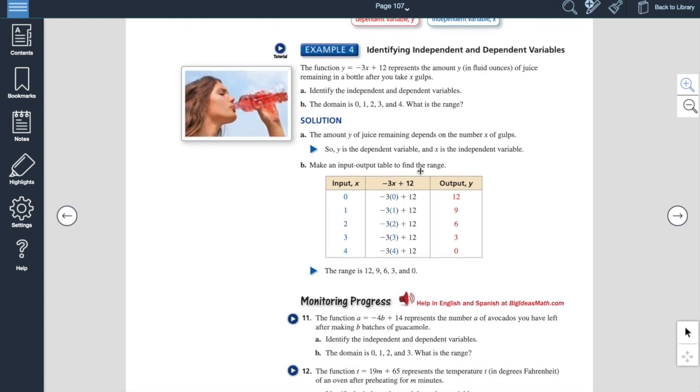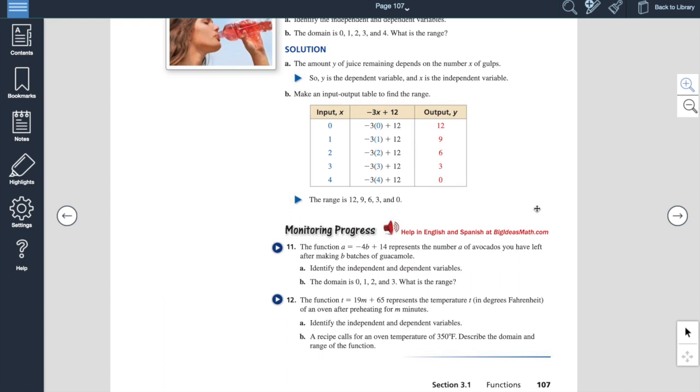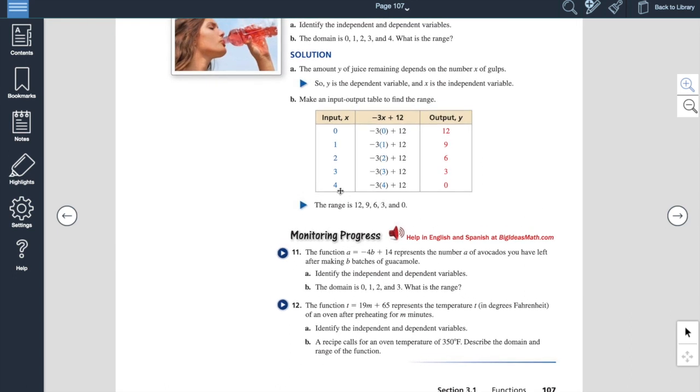Now, when they walk you through this one, this function y equals negative three x plus 12 represents the amount of juice that's left in a bottle. After you take x number of gulps. So according to this, your input is how many gulps you take. Your output is how many ounces of fluid are left in the bottle. So notice on this, if you don't take any gulps at all, zero, you've got 12 ounces. So in other words, that bottle, when it's full, has 12 ounces in it. You don't take any gulps, there's 12 ounces. If you take a gulp, it's down to nine ounces. That basically means you're losing three ounces every gulp. That's what this minus 3x represents. That's your rate of change. It goes down by three ounces every time you take a gulp. This means that four gulps, you don't have anything left in the bottle. Zero ounces.